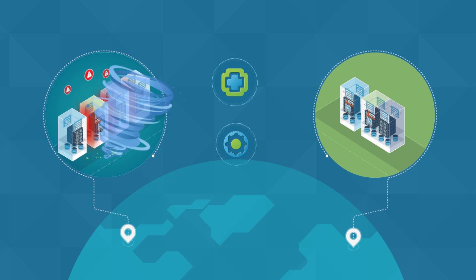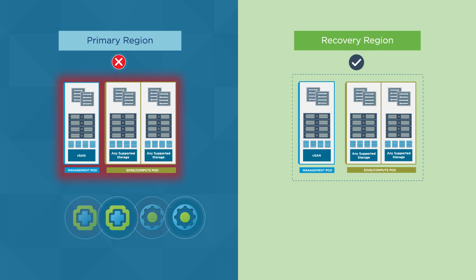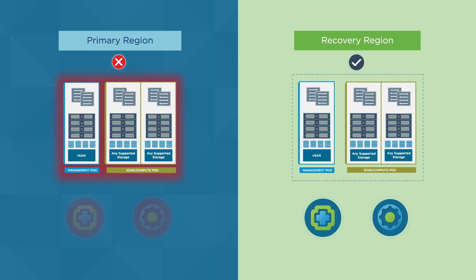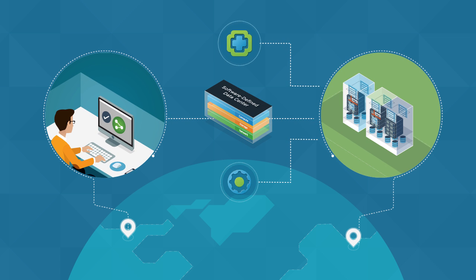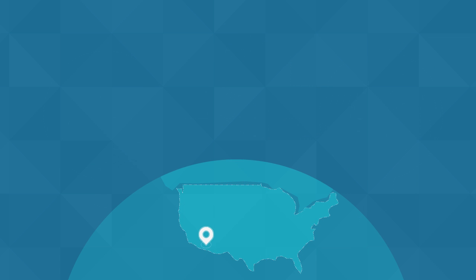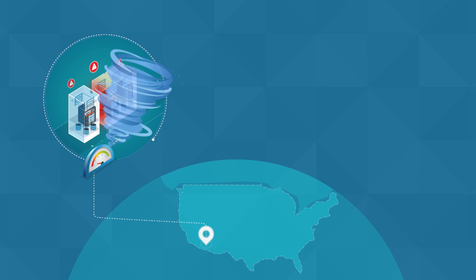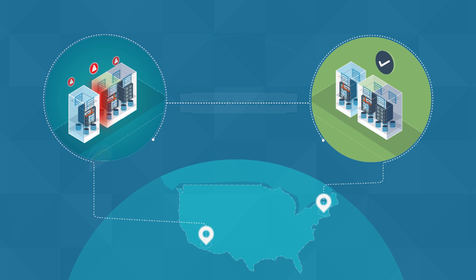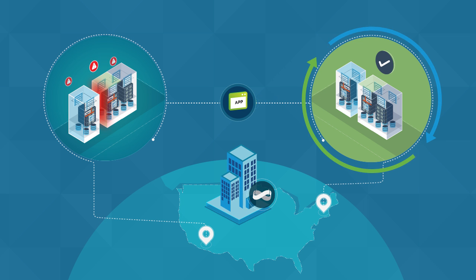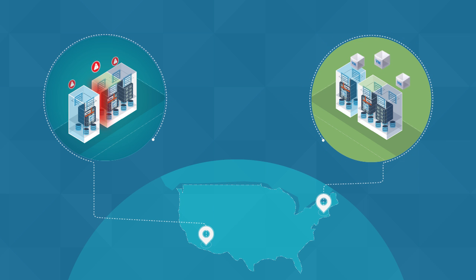In the event of a disaster affecting the primary region, vRealize Operations, vRealize Automation, and vRealize Business for Cloud are brought online in the recovery region. Once recovered, vSolutions resume normal operations. Following the recovery, any business workloads affected by the disaster can optionally be recovered in the same way, or depending on the application, be redeployed in the recovery region in order to ensure business continuance.